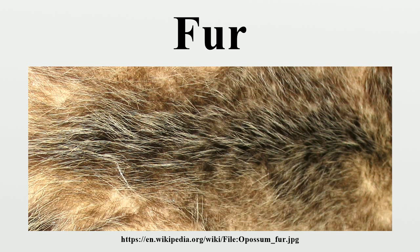Mammals with well-developed down and guard hairs also usually have large numbers of awn hairs. These begin their growth much as guard hairs do, but change their mode of growth, usually when less than half the length of the hair has emerged. This portion of the hair is called awn. The rest of the growth is thin and wavy, much like down hair. In many species of mammals, the awn hairs comprise the bulk of the visible coat. The proximal part of the awn hair shares the function of the down hairs, whereas the distal part aids the water-shedding function of the guard hairs.